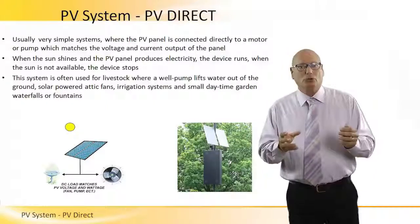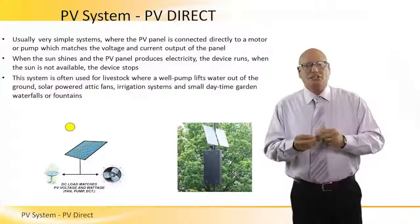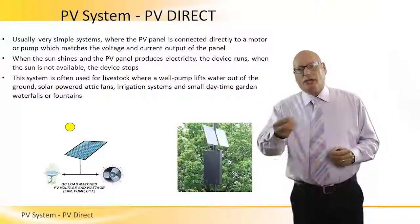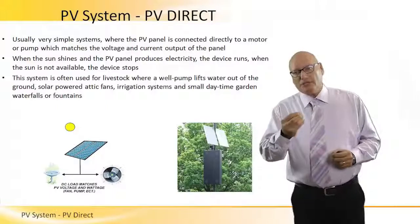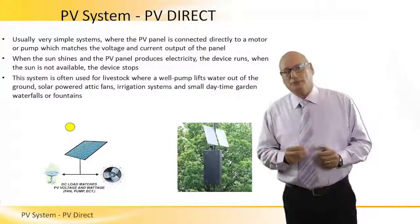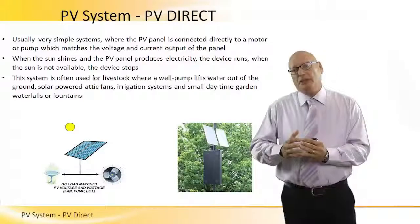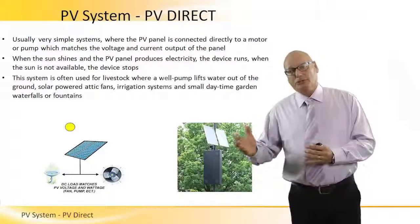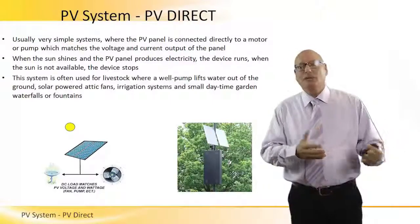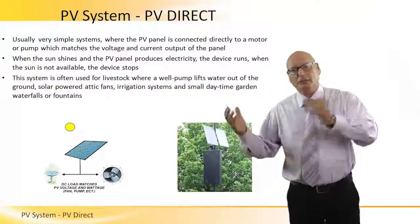In other words, I can connect a panel of 6 volt DC output to a light bulb that requires 6 volt DC input. So there is a match between the output voltage of the panel and the input voltage that the load requires, and the panel will directly energize the load and the light bulb will light.